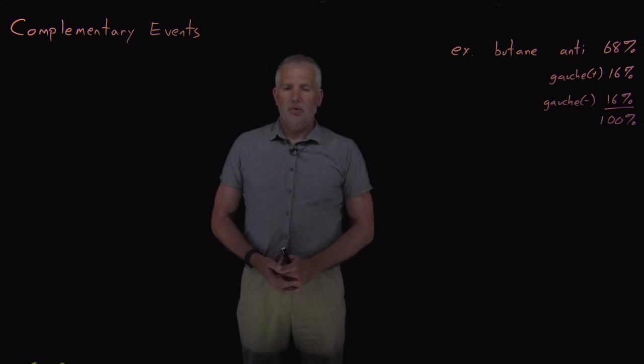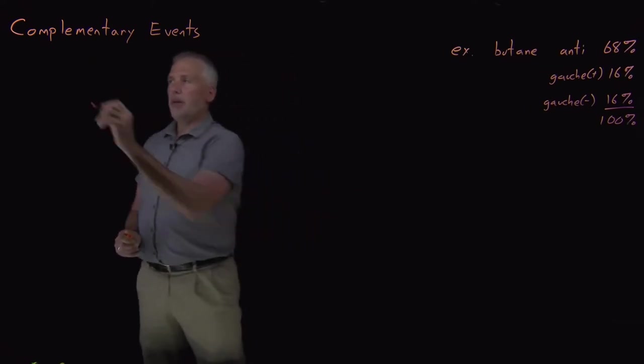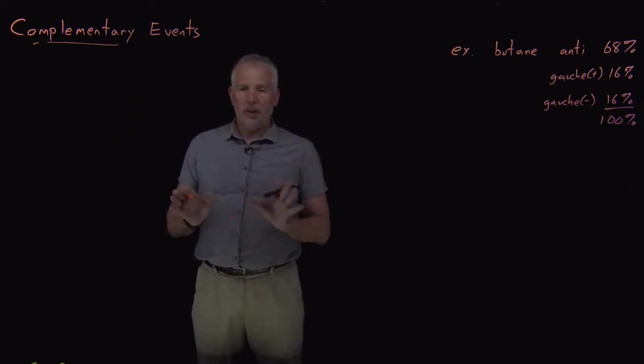All right, so another important rule for calculating basic probabilities that we'll make use of is the rule describing complementary events. So what I mean by this term complementary events, two events are complementary if between them they cover all the different possibilities.